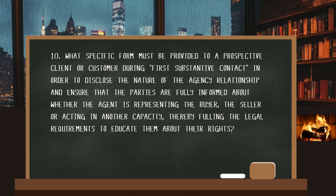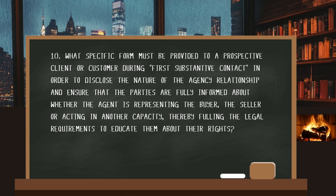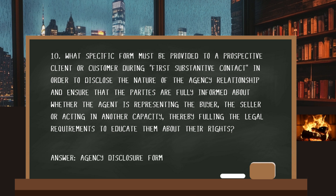Number ten. What specific form must be provided to a prospective client or customer during first substantive contact in order to disclose the nature of the agency relationship and ensure that the parties are fully informed about whether the agent is representing the buyer, the seller, or acting in another capacity, thereby fulfilling the legal requirements to educate them about their rights? The answer: the agency disclosure form.